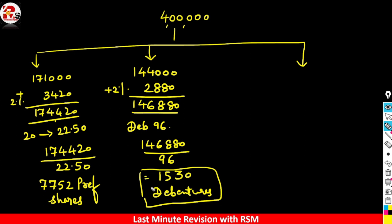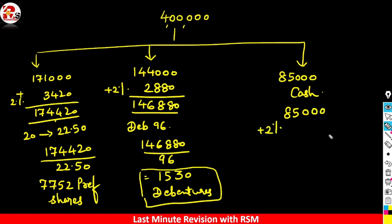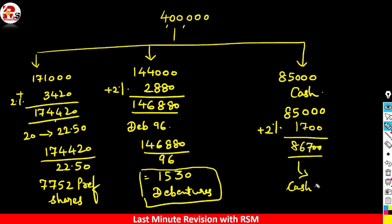For option 3, the amount was 85,000 — this is redemption in cash. We add the same 2% premium: 2% of 85,000 is 1,700. So 85,000 plus 1,700 equals 86,700. This will be the redemption in cash amount — 86,700 will be paid out to those debenture holders.